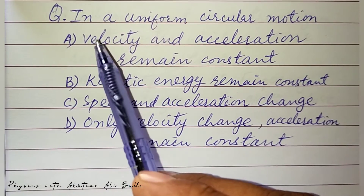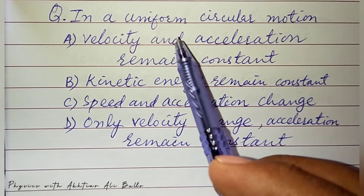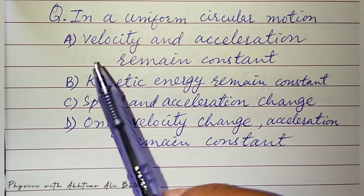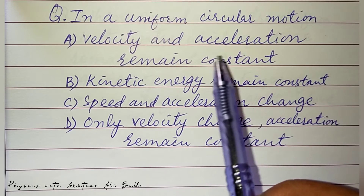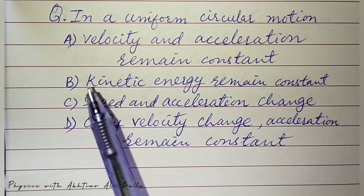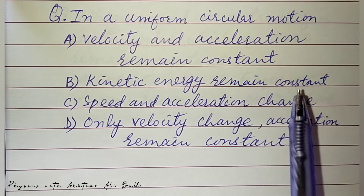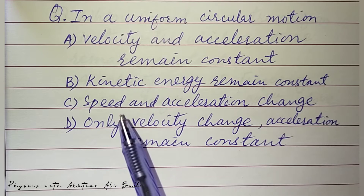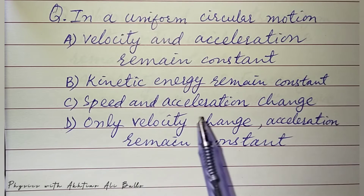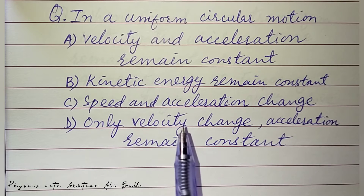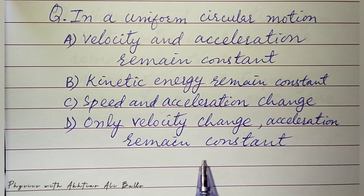The question is: in a uniform circular motion — a) velocity and acceleration remain constant, b) kinetic energy remain constant, c) speed and acceleration change, d) only velocity changes, acceleration remains constant.